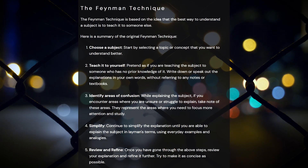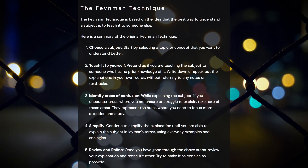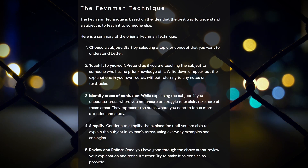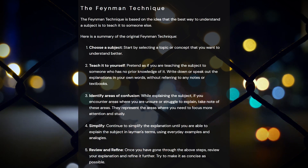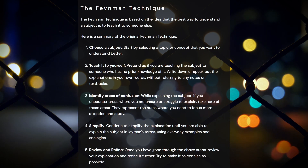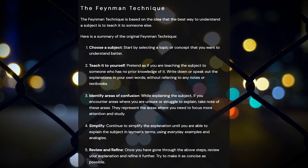The original Feynman technique can be broken down into five key steps. You choose a subject, you teach it to yourself, you identify areas of confusion, you then simplify that and review and refine it. By actively teaching the subject and constantly questioning where your grey areas are, you can expand and reinforce your knowledge of the subject itself.